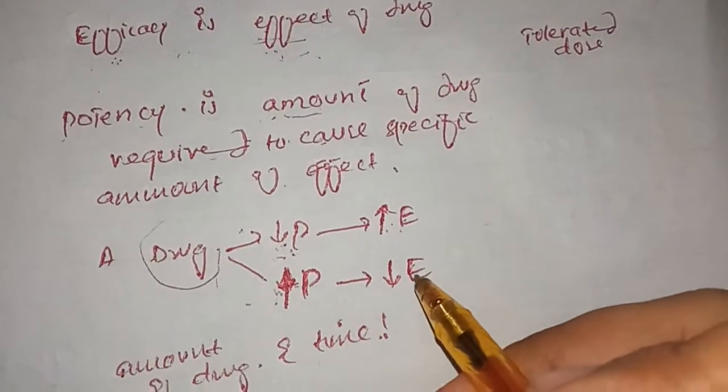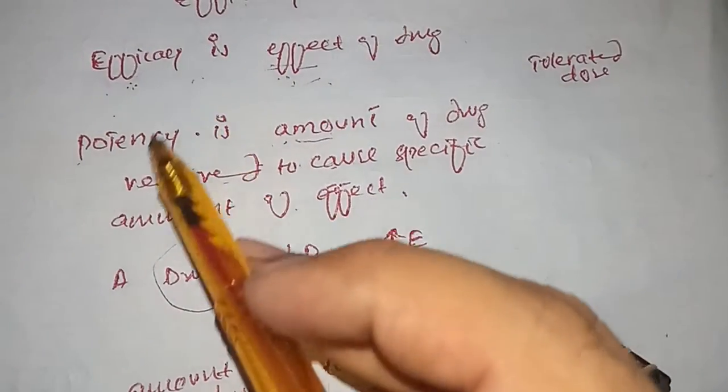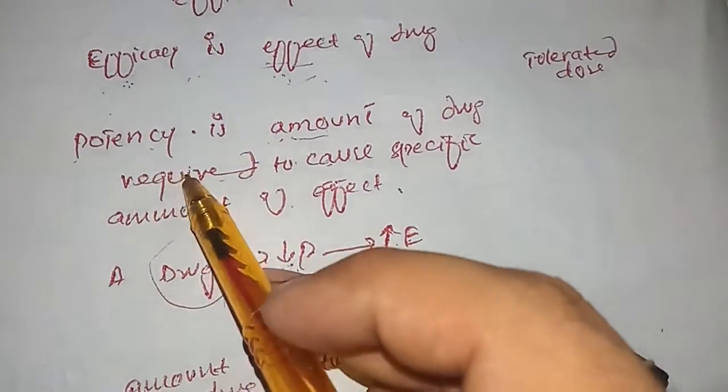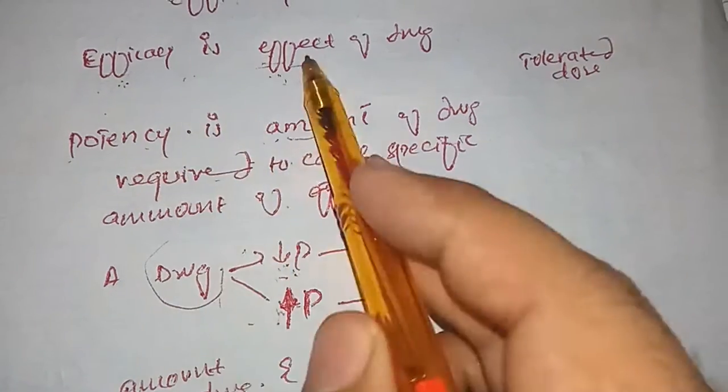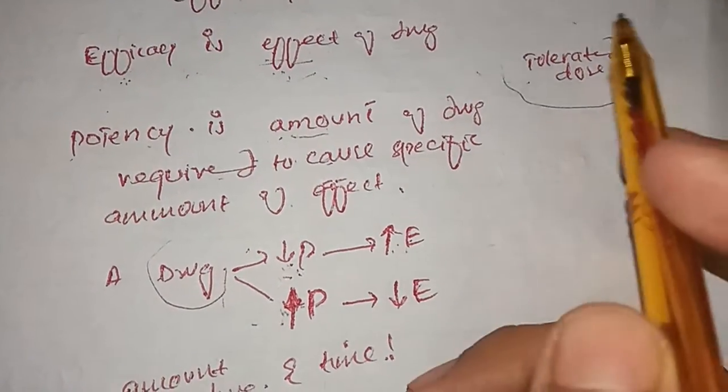So that's it, all about potency and efficacy. Don't be confused: efficacy is the effect, potency is the amount to produce the effect. And remember, efficacy is always the effect of the drug at tolerated dose. That's it.